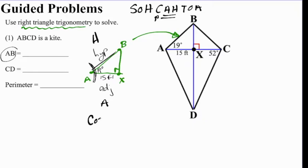We see adjacent and hypotenuse are affiliated with the cosine function. So we're going to write our equation. Cosine, the angle is 19 degrees, equals adjacent, which is 15 feet, over hypotenuse, which is side AB.